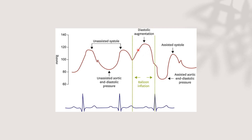The augmented diastolic pressure rises above the unassisted systolic pressure. At the end of diastole, the balloon deflates, lowering the aortic end-diastolic pressure — this is the assisted end-diastolic pressure. The following assisted systole is then lower than the unassisted systole. So during inflation the balloon produces supra-systolic diastolic augmentation, while during deflation the assisted systole and assisted aortic end-diastolic pressure both decrease — allowing more ejection from the left ventricle and increasing cardiac output.